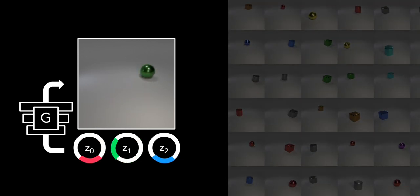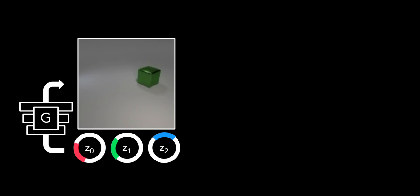Regardless if the object is a square or a sphere, brown or green, z0 changes the vertical position. In other words, the change caused by the z0 component is somewhat blind to both shape and color.